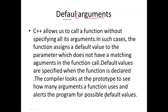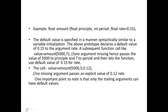Consider this example: float amount(float principle, int period, float rate = 0.15). Here rate is set to a default value of 0.15. If we call value = amount(5000, 7), then principle gets 5000, period gets 7, and since no rate is provided, the default value 0.15 is used.